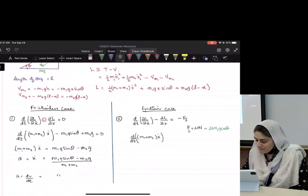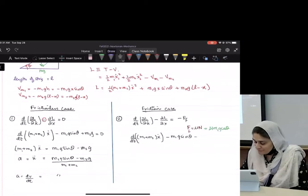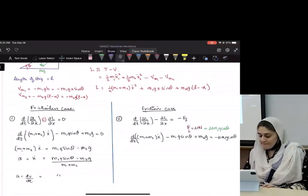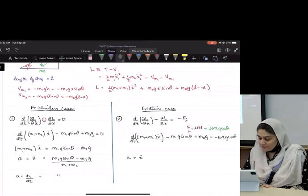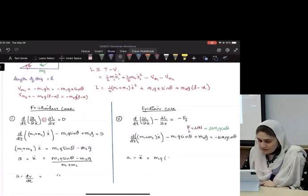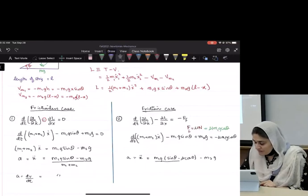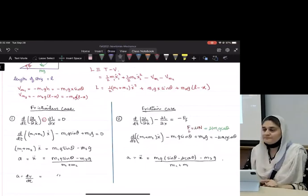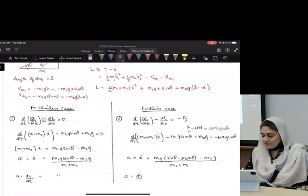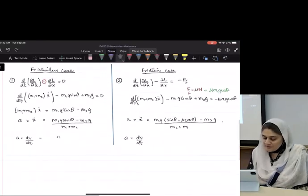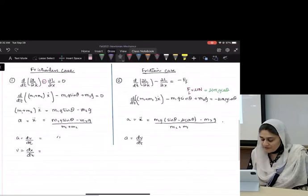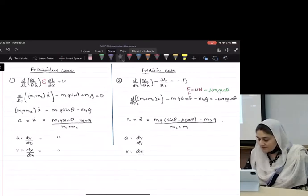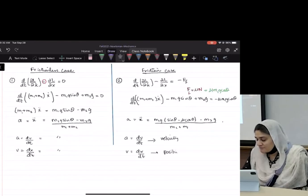D over dt of M1 plus M2 X dot, again, right? Minus M1G sine theta plus M2G equals minus mu M1G cosine theta. And then the answer that I get that you guys have to reconfirm is M1G sine theta minus mu cosine theta minus M2G divided by M1 plus M2. And again, you have to do the A, which is dV over dt, and then one more step down, which will be V equals dx over dt. That will help you find the velocity, this will give you velocity, and this will give you position, and a smiley face.